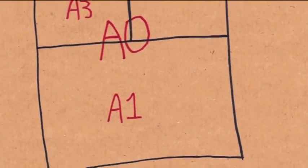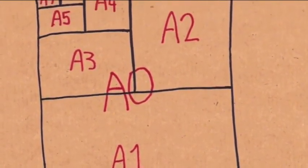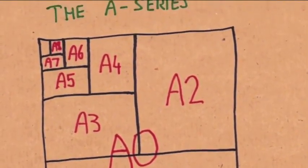In fact, they start off with A0. A0 is defined to be a piece of paper which has a ratio of square root of 2 and has an area of 1 square metre. In fact, root 2 is the only ratio where this works.